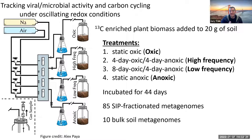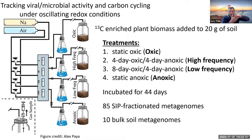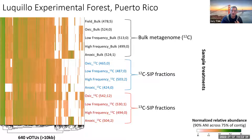From this we took 95 metagenomes - terabytes of data. We wanted to compare and ask: when we do the SIP fractionation and look at the active ones, are we actually decreasing complexity enough to get increased resolution? We took 85 fraction metagenomes - extracting DNA then looking at heavy and light fractions - and 10 bulk soil metagenomes where we just extracted DNA and sequenced directly, the traditional metagenome approach. We wanted to compare them.